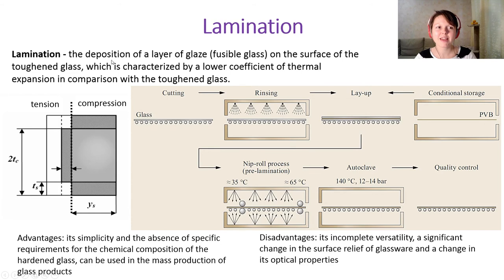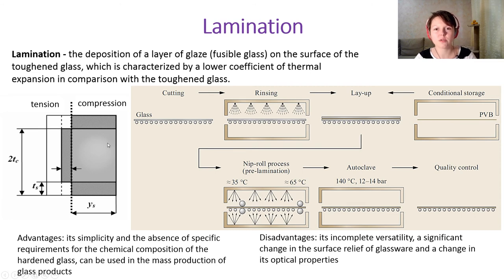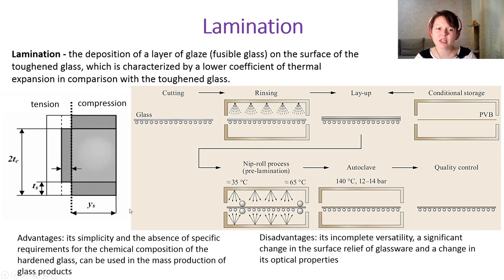The second method for glass toughening is lamination — the deposition of a layer of fusible glass onto the surface of the toughened glass, which is crystallized with a low coefficient of thermal expansion compared to the base glass. This creates compression near and on the surface of the glass and tension in the volume. The advantage of lamination is its simplicity and absence of specific requirements for the chemical composition of the toughened glass, making it suitable for mass production.